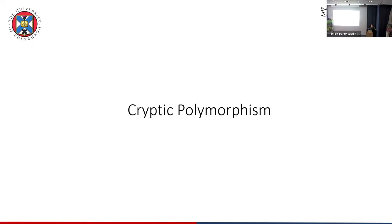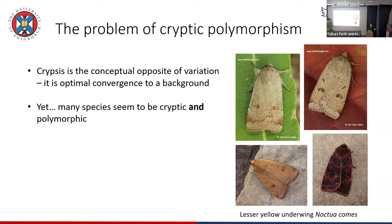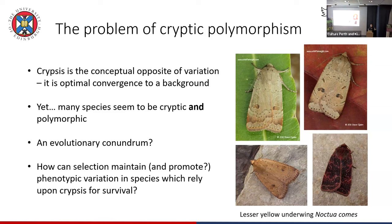Now I want to jump to the idea of cryptic polymorphism. The lesser yellow underwing is a nice example. If you think about camouflage, it's really the opposite of variation — the idea is that you come to resemble an environment so perfectly you're indistinguishable from it. But the fact is many species we see when we run the moth trap are camouflaged and polymorphic, or variable as well. So the question is: how can you have maximal resemblance to the environment on the one hand but lots of variation on the other?